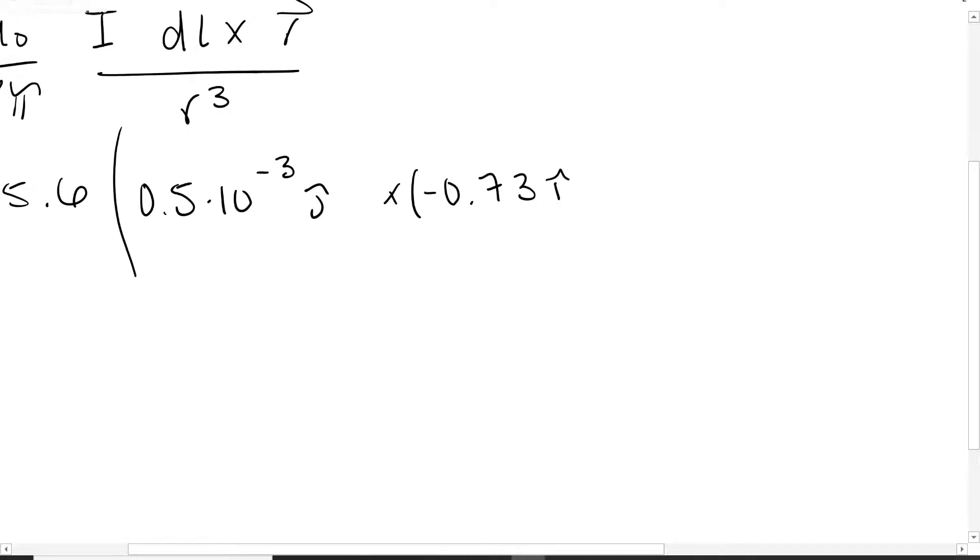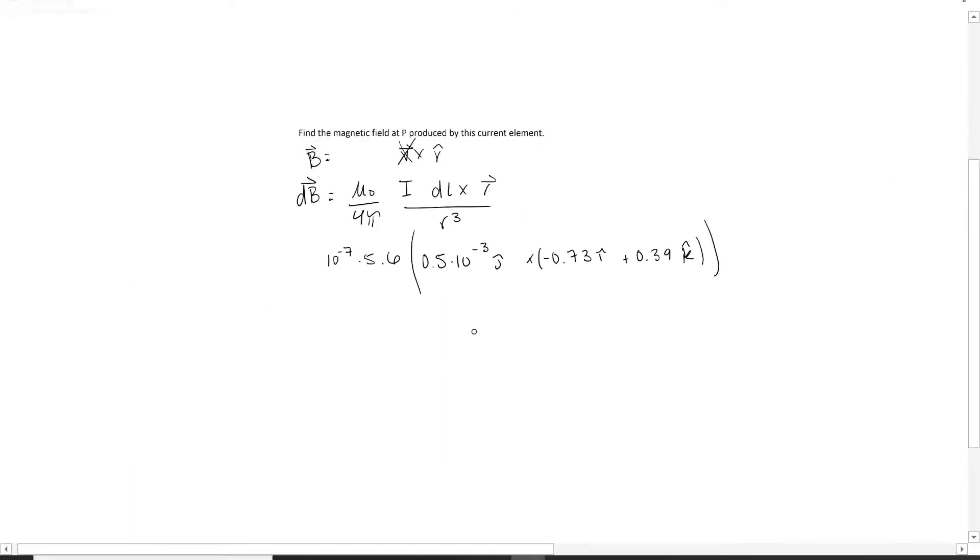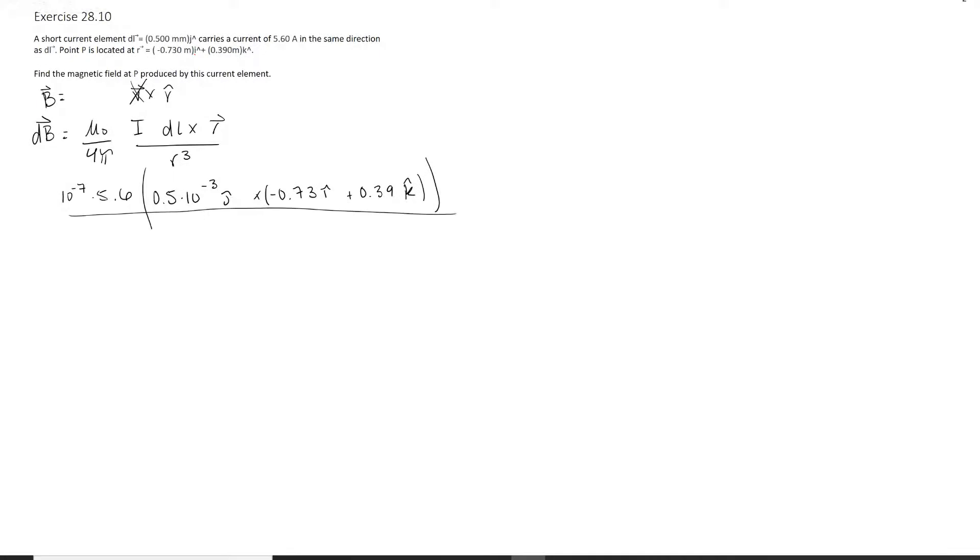We have negative 0.73 in the i direction and 0.39 in the k direction. Watch your units - they give you some in meters, some in millimeters. All that is divided by r cubed. For r cubed you cannot just cube these individual numbers. You have to do 0.73 squared plus 0.39 squared, then that whole square root cubed.